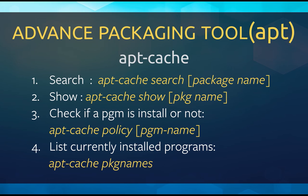Next is the apt-cache command, which is a very powerful command. To search a package name present in the OS project repos, you can type apt-cache search and then give the package name. Another command is apt-cache show package-name, which will show detailed information about that program. If you want to see if a program is installed on your computer, you can do apt-cache policy and then give the program name. And if you want to see all programs installed on your computer, you can type apt-cache pkgnames.